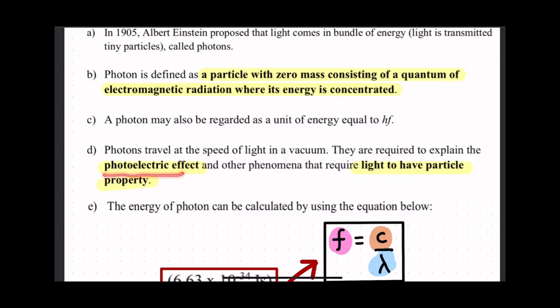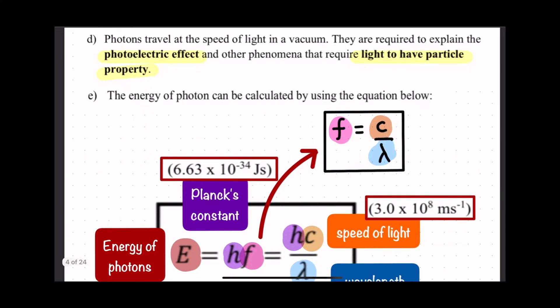So now we want to test whether light behaves as a particle. Before this you have learned about geometrical optics and physical optics where light behaves more like a wave. This is the equation for energy of photon that can be calculated using the equation below.